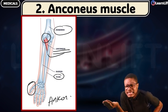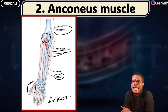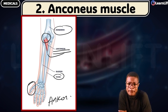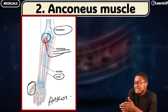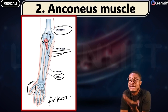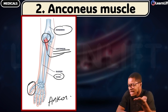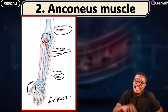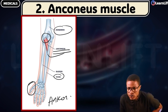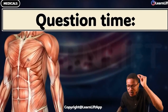Anterior compartment = flexor muscle. Posterior compartment = extensor muscle. If you get this, let's get to work — question time! Answer all these questions correctly.